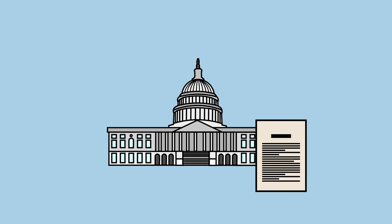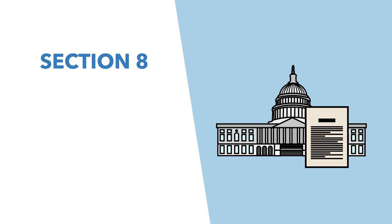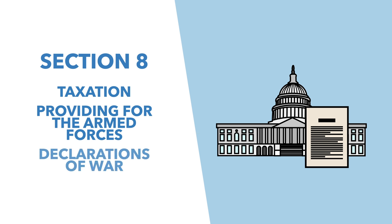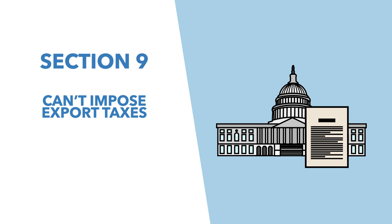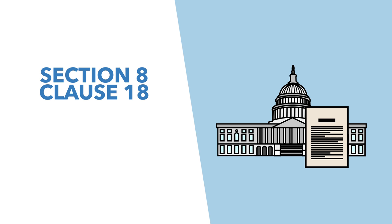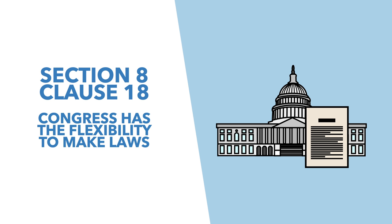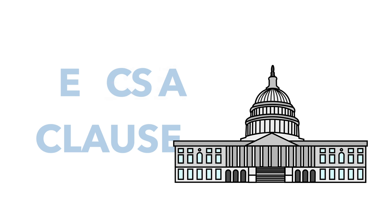It also spells out exactly what Congress can and cannot do. For example, Article 1 Section 8 sets out the powers specifically designated to Congress, such as taxation, providing for the armed forces, and the declaration of war, while Section 9 sets out powers specifically denied to Congress, such as export taxes and titles of nobility. Section 8 Clause 18, however, is a clause designed to give Congress the necessary flexibility required to make laws, usually referred to as the necessary and proper, or elastic, clause.